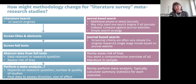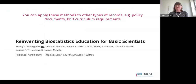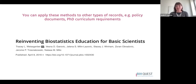While we'll be talking today about a study applying these literature survey methods to research papers, it's important to remember you can apply these same methods to other types of records as well — including documents describing policies for journals, funding agencies, or institutions, or for example PhD curriculum requirements. An example of that is a paper we did looking at whether statistical education was required for a PhD in physiology in the top NIH-funded physiology departments.